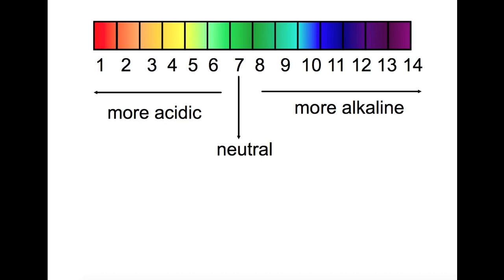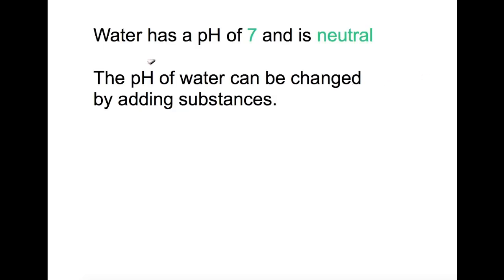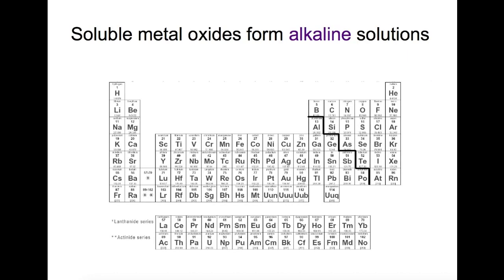So how do we make acids and alkalis? Water has a pH of 7 and is neutral. If we add substances to water we can affect its pH. If we add soluble metal oxides to water then we can form alkaline solutions. Metals are found on the left hand side of the periodic table in the area highlighted here. If you have a metal oxide which is soluble and you can find that information on page 8 of your data book then you will form an alkaline solution.